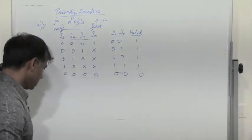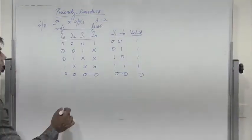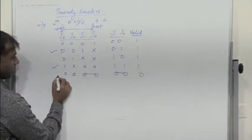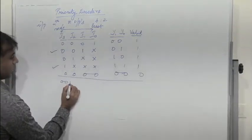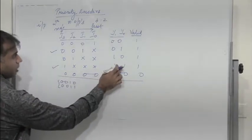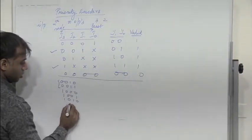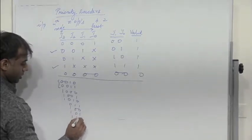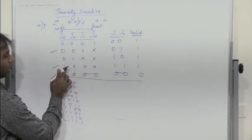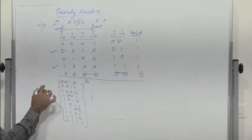This can be designed using a K-map. Let's find the expression for y0. y0 is 1 for the combination 0,0,1,x — where x is either 0 or 1 — corresponding to i3=0, i2=0, i1=1. y0 is also 1 for the combination 1,x,x,x, that is when i3 is 1, for all 8 combinations.